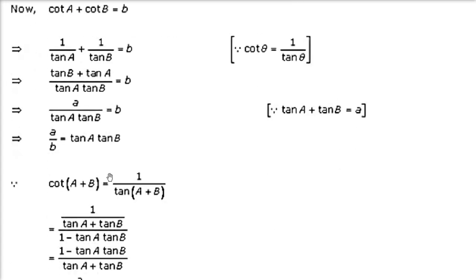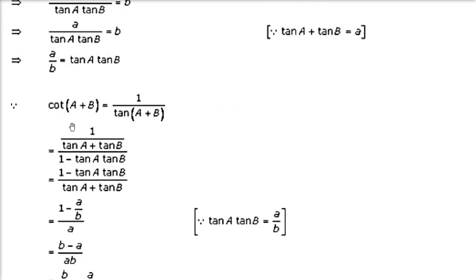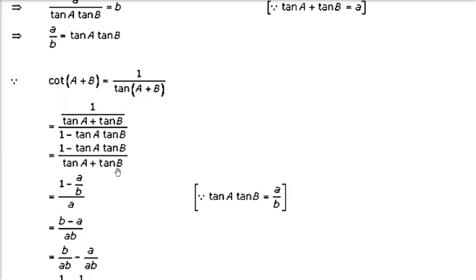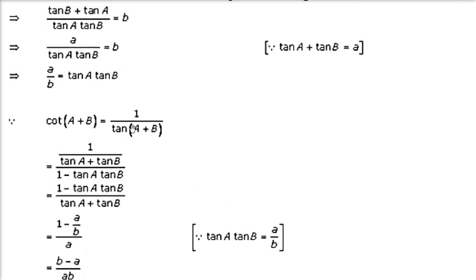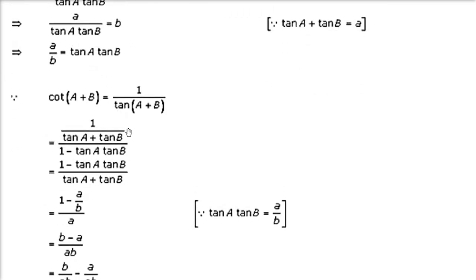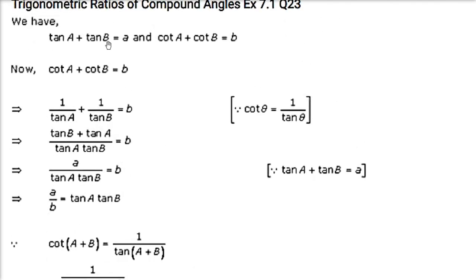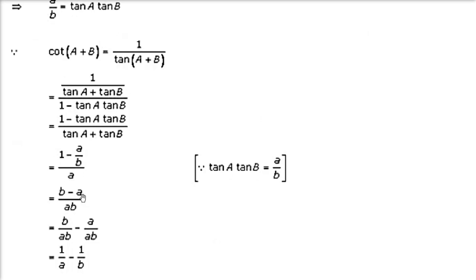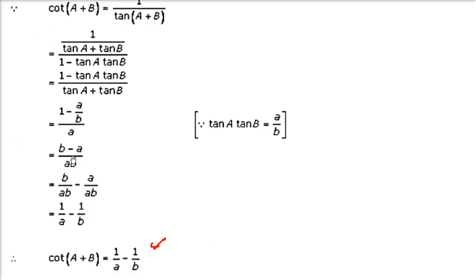Now prove cot(a + b). cot(a + b) = 1/tan(a + b) = 1 / [(tan(a) + tan(b))/(1 − tan(a)·tan(b))]. So this becomes (1 − tan(a)·tan(b))/(tan(a) + tan(b)). Substituting: tan(a)·tan(b) = a/b and tan(a) + tan(b) = a. You get (1 − a/b)/a = (b − a)/ab. Separating: b/ab − a/ab = 1/a − 1/b. This is proved.